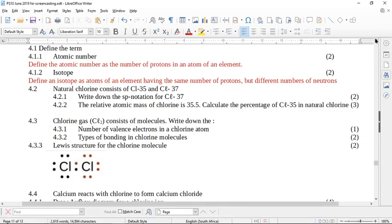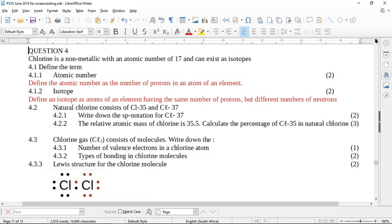This is question four from the Limpopo June 2019 question paper from the chemistry paper. It says chlorine is a non-metallic with an atomic number of 17 and can exist as isotopes.